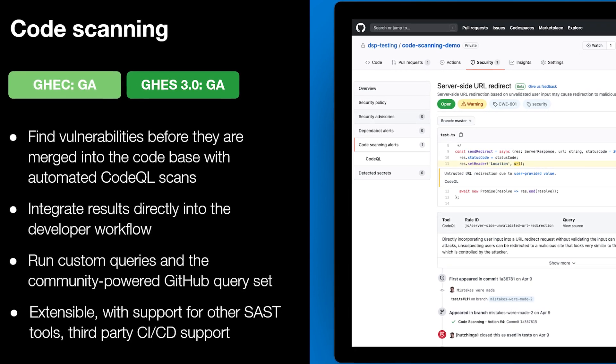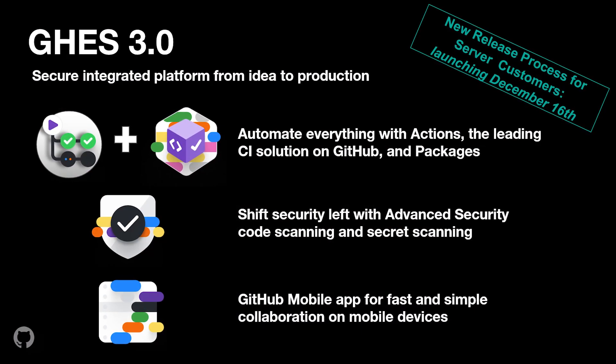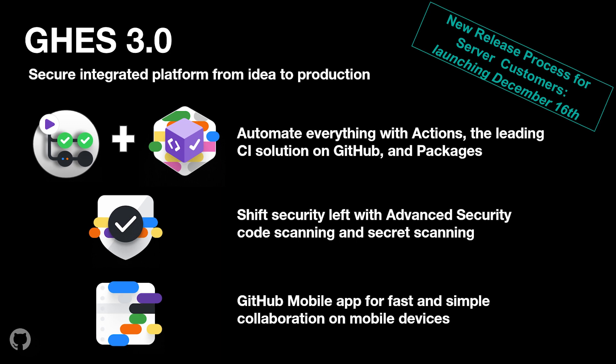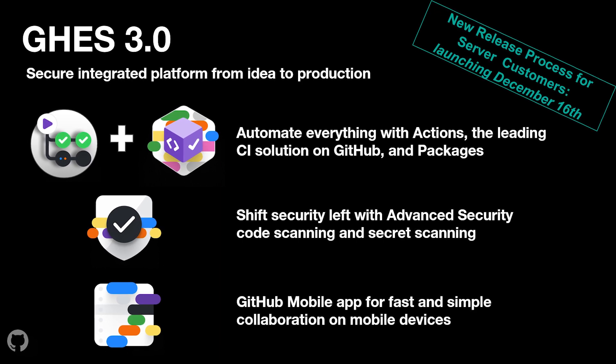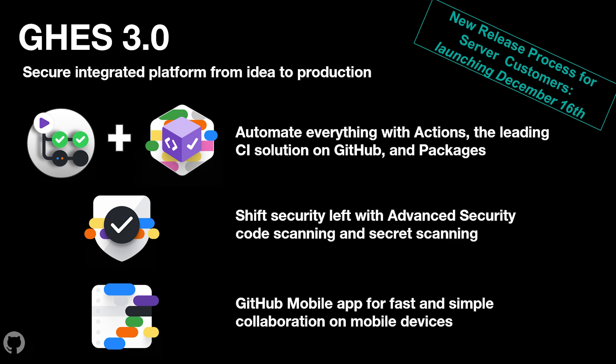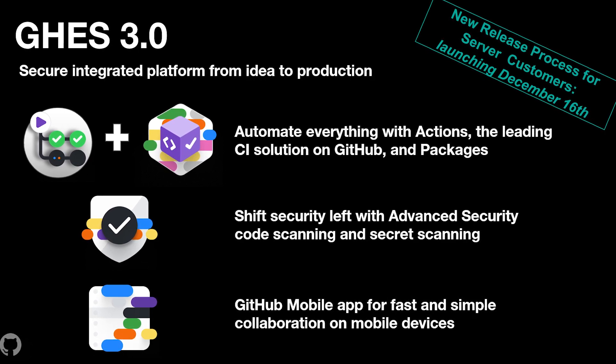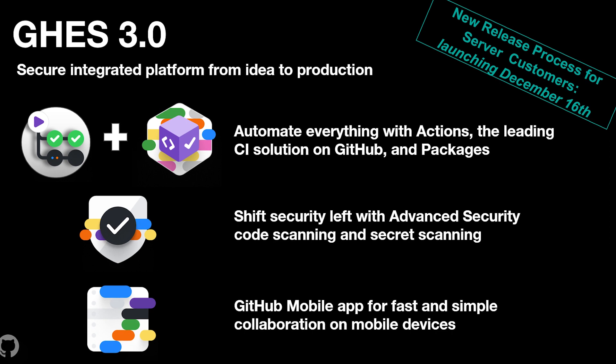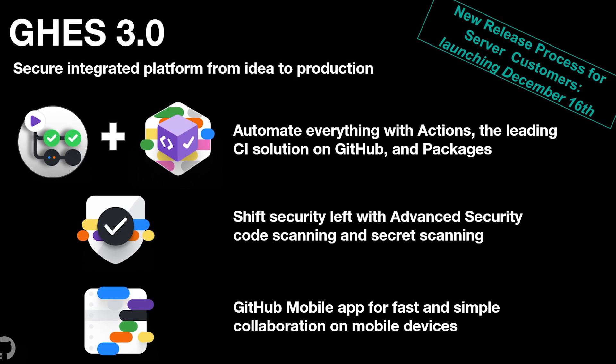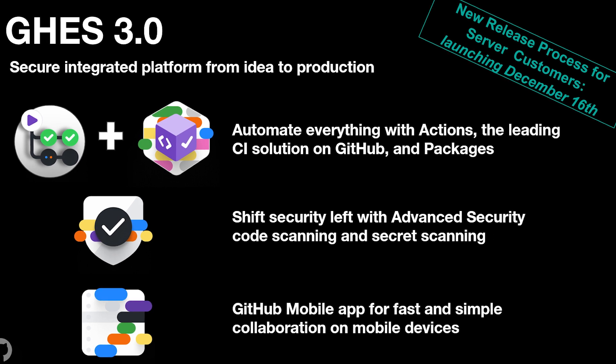Code scanning will also be part of the upcoming GitHub Enterprise Server 3.0. Welcome to GitHub Enterprise Server 3.0 — launching on December 16, 2020. It will bring a ton of innovation in the server space, shipping with Actions, Packages, and Advanced Security, including code scanning and secret scanning. And as I mentioned in my video about the new features of the GitHub mobile app, GitHub for mobile is finally available for GitHub Enterprise Server as well.